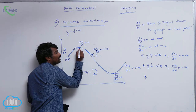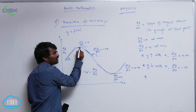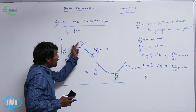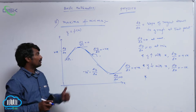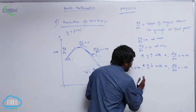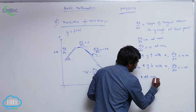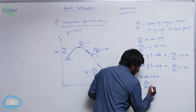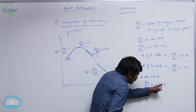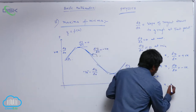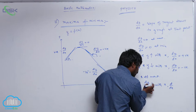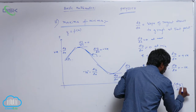Consider the maxima point. Just before it, the slope is positive; just after it, the slope is negative. So it goes from positive to 0, then to negative — that means dy by dx is decreasing. At maxima, dy by dx is decreasing with x, so its differentiation with respect to x must be negative. That means the differentiation of dy by dx with respect to x — which is d²y by dx² — is negative, i.e., less than 0.